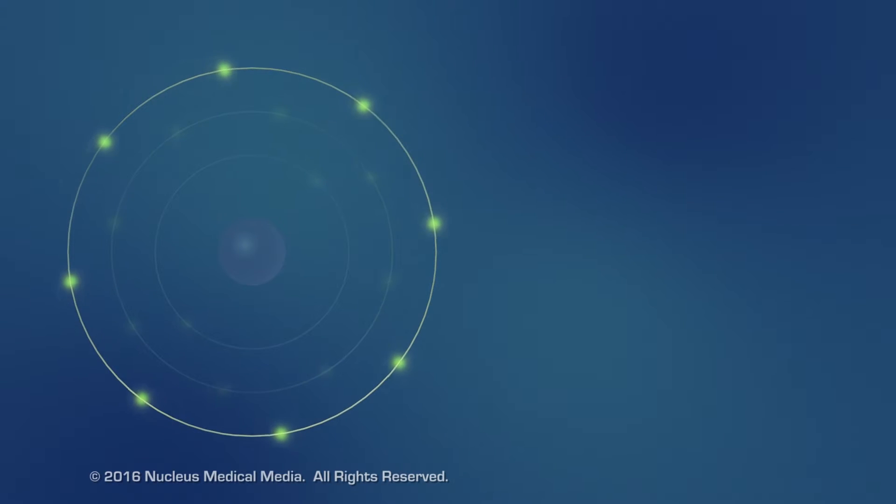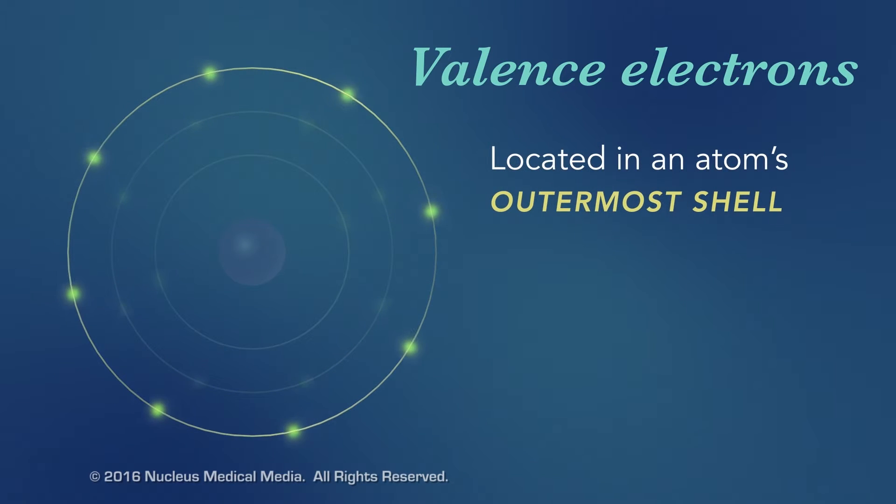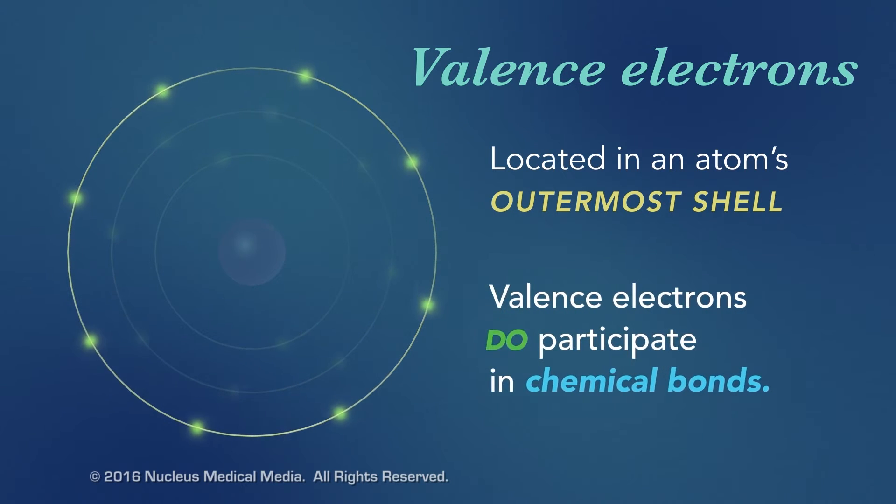In contrast, electrons in the outermost shell of an atom are called valence electrons. Valence electrons do participate in forming chemical bonds.